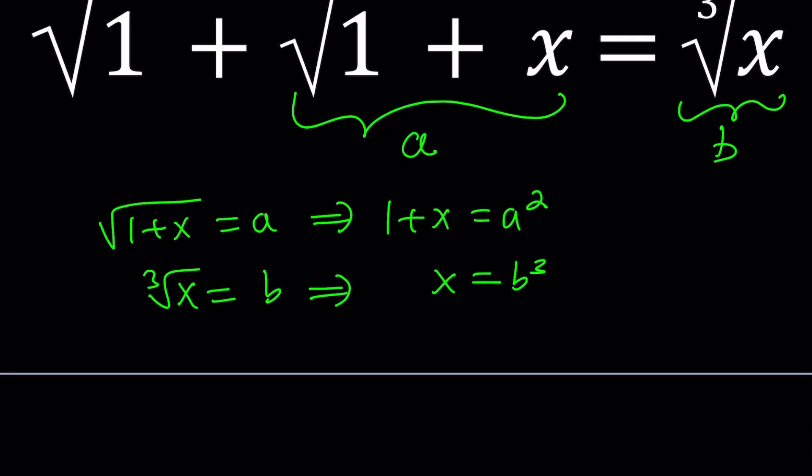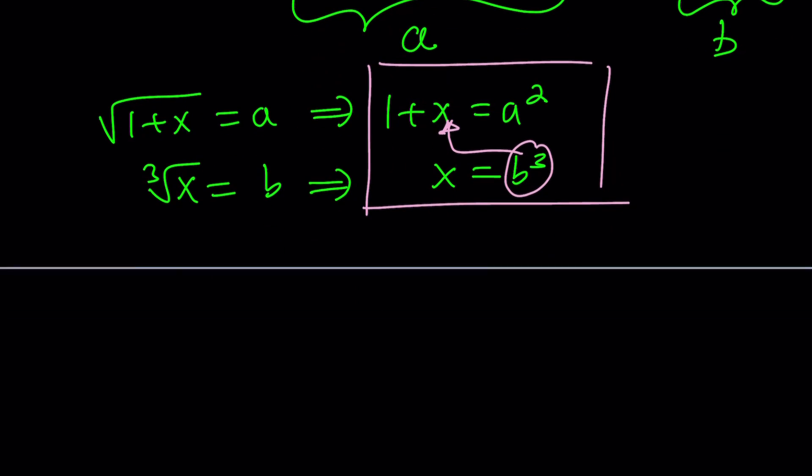So the first system that I'm going to work on is this one. Let's eliminate the x from these two equations. You can do that by subtraction or by replacing x with b cubed in the first equation. That gives us 1 plus b cubed equals a squared.